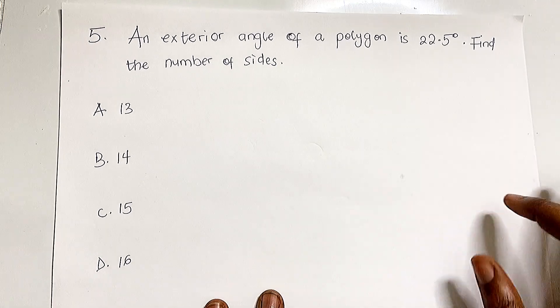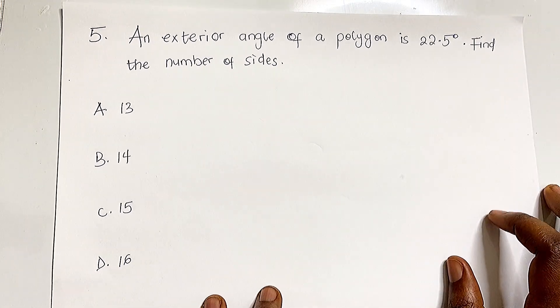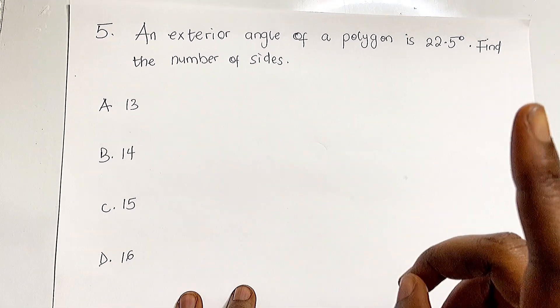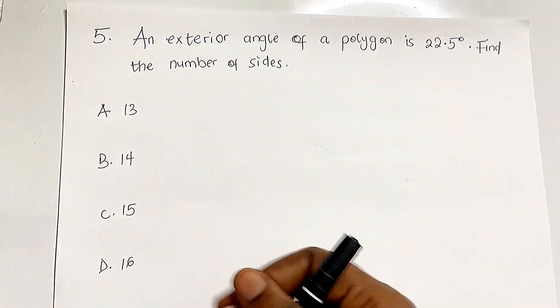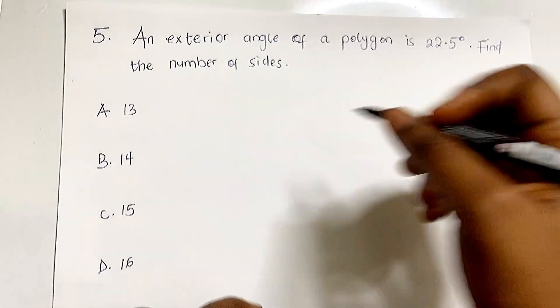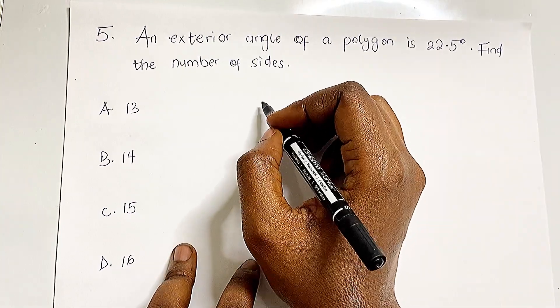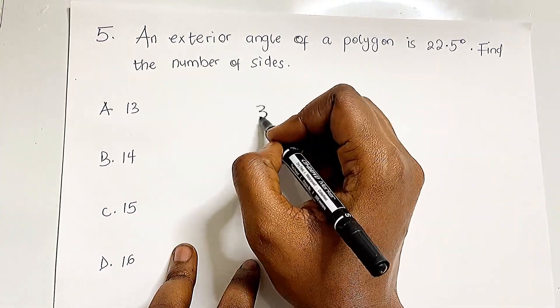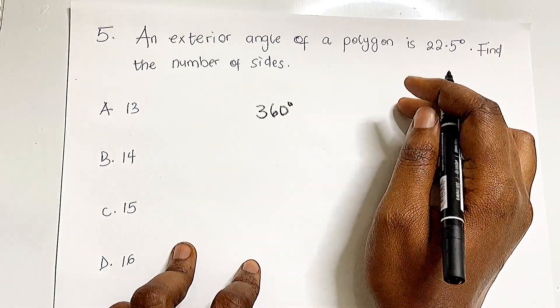Our last question: The exterior angle of a polygon is 22.5 degrees. Find the number of sides. We know that the sum of exterior angles of any polygon is 360 degrees.